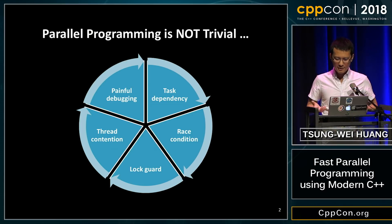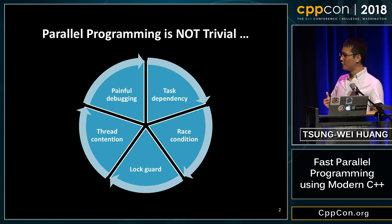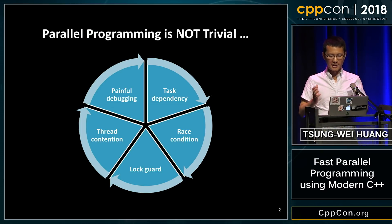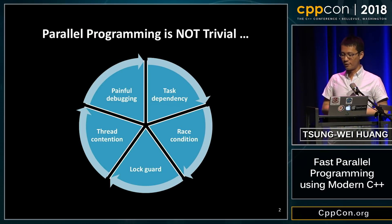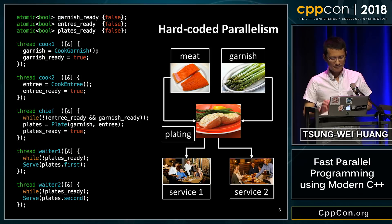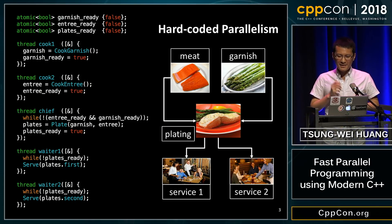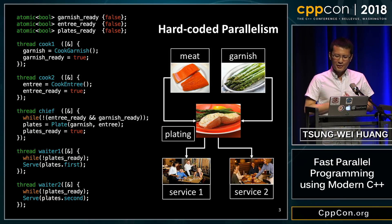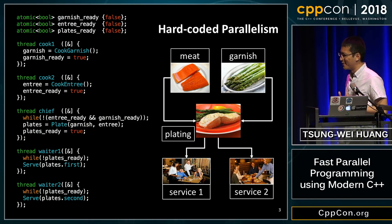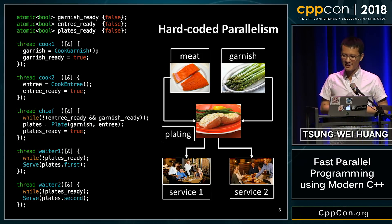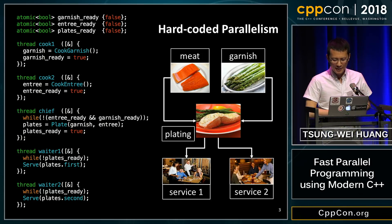If something goes wrong, we move to the most painful state, which is debugging. We all agree debugging a parallel program is extremely painful. With that being said, people try really hard to hard-code the task dependency when writing parallel programs.